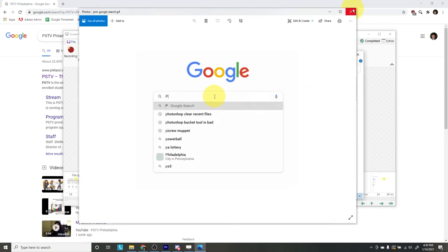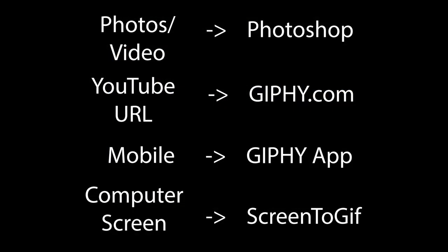If you've gotten this far in the video, thank you so much for watching. I really had a lot of fun exploring the different ways to make a GIF. Just as a review, the four ways to make a GIF are: if you have photos or a video, go to Photoshop; if you have a YouTube URL, go to Giphy.com; if you just have a phone, use the Giphy app; and if you want to record something on your computer screen, use Screen to GIF. Thank you so much for watching PSTV's workshop tutorial on making GIFs, and I hope to see you in future tutorials.